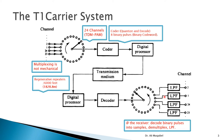A low-pass filter is required at the receiver to convert the samples back into a continuous signal, so that the destination can listen to a continuous voice. This complete setup is called the T1 carrier system.